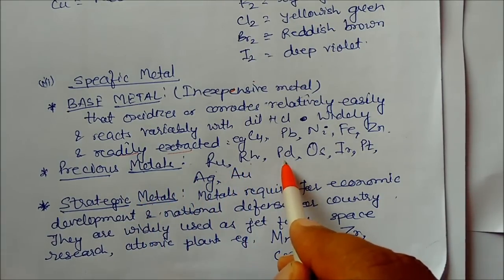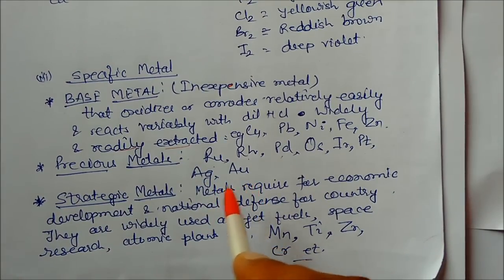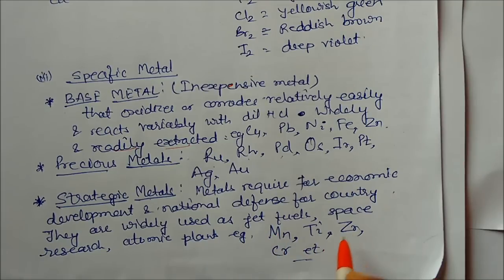Strategic metals are those metals which are required for economic development and national defense for a country. They are widely used as jet fuels, space research, atomic plants—developed for the development of the country like magnesium, titanium, zirconium, chromium. They are resistant to acid and base, highly resistant to corrosion.